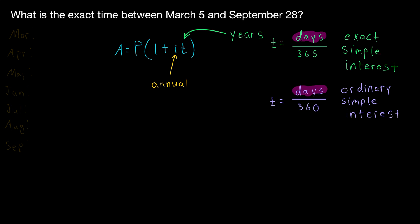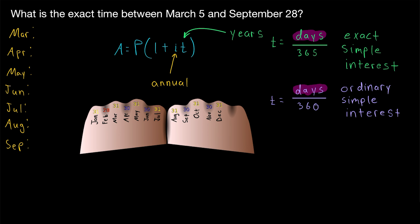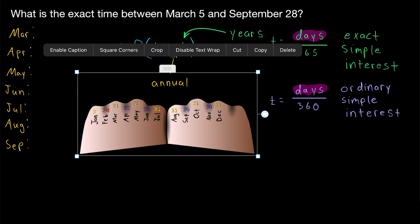To calculate exact time, it's helpful to break the period into months, since different months have different numbers of days. If you don't remember how many days are in each month, you can use your knuckles: put your hands together, and your knuckles represent months with 31 days — January, March, May, July, August, October, and December. The spaces between your knuckles represent months with 30 days, or 28 or 29 for February depending on whether it's a leap year. April, June, September, and November fall in the crevices with 30 days.